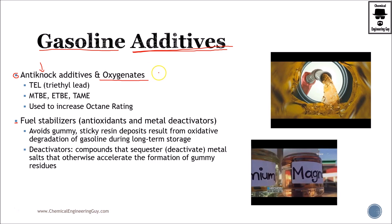We have seen some things on anti-knocking and why it is important to have a high octane rating and how we add oxygenates. But technically speaking, what are they? Triethyl lead is no longer used, so you can forget that. MTBE, ETBE, and TAME are oxygenates which increase the octane rating — methyltertiarybutyl ether, ethyltertiarybutyl ether, and tert-amylmethyl ether — all used to increase octane rating. That's essentially the main work of these additives.